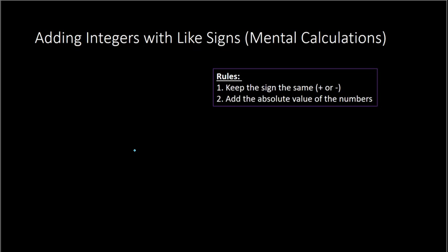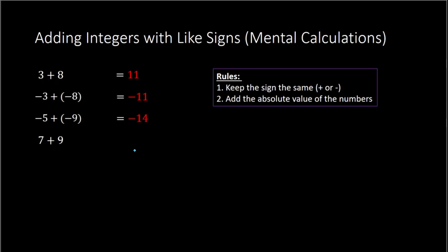Here are some examples. 3 plus 8 is positive 11, because both numbers are positive — we keep the sign and add 3 and 8. Negative 3 plus negative 8 is negative 11 — both signs are negative, so we keep the sign negative and add 8 and 3. Negative 5 plus negative 9 is negative 14 — keep the sign negative and add 5 and 9. And 7 plus 9 is positive 16 — both positive, so just add.